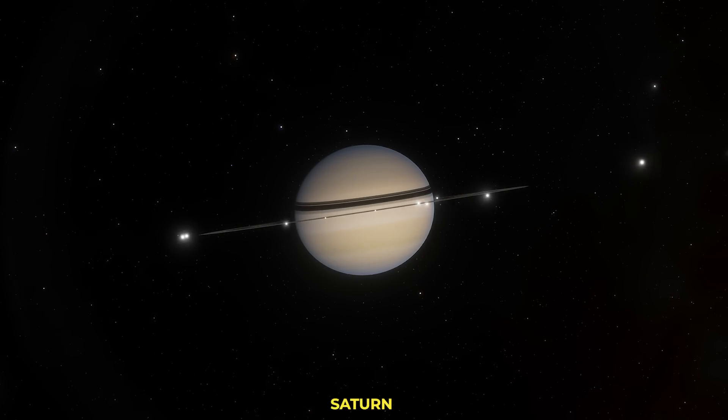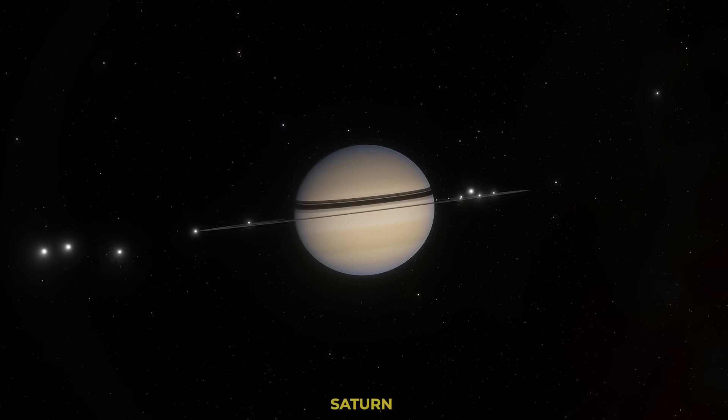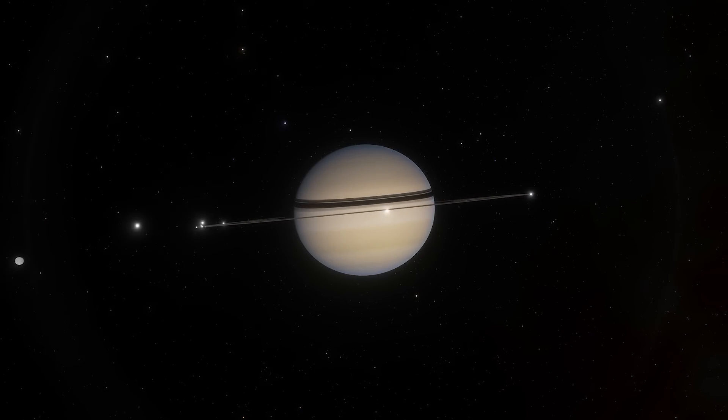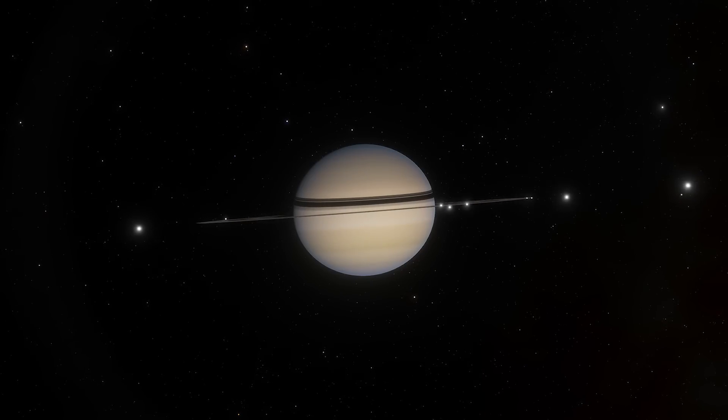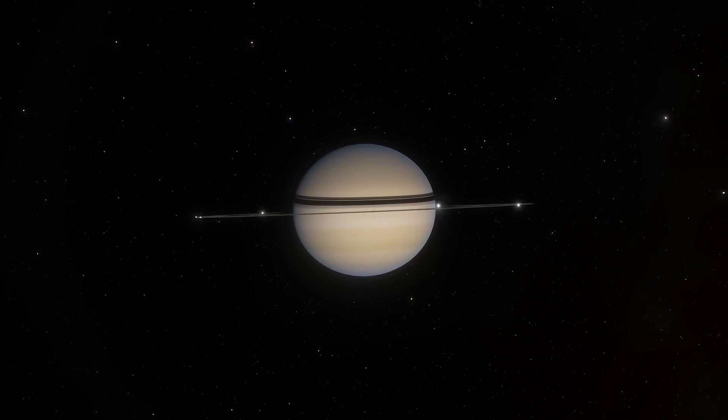Now, take Saturn. It spins so fast that it bulges even more, about 10% thicker around the middle. But rotation can do even crazier things.